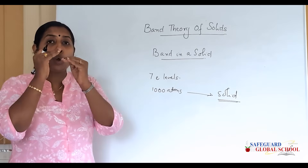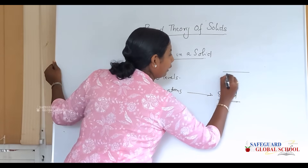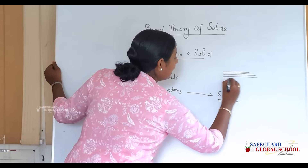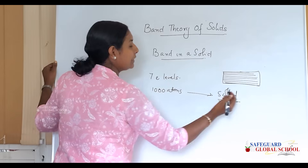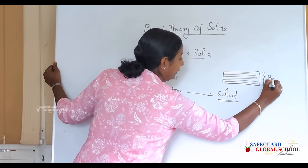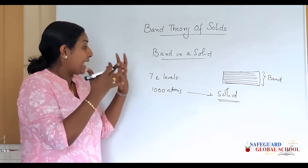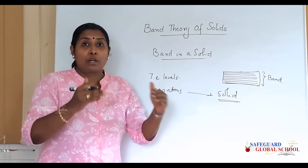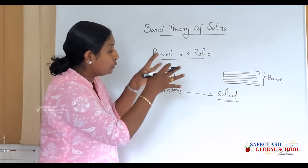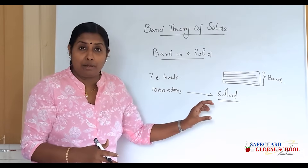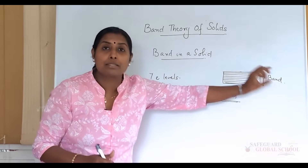When we look at solids, the closely spaced electronic energy levels of every atom — when drawn together — form a band. A discrete energy level corresponds to a single atom, but when atoms combine to form a solid, there are numerous energy levels lying very close to each other. These closely spaced levels are collectively called bands.